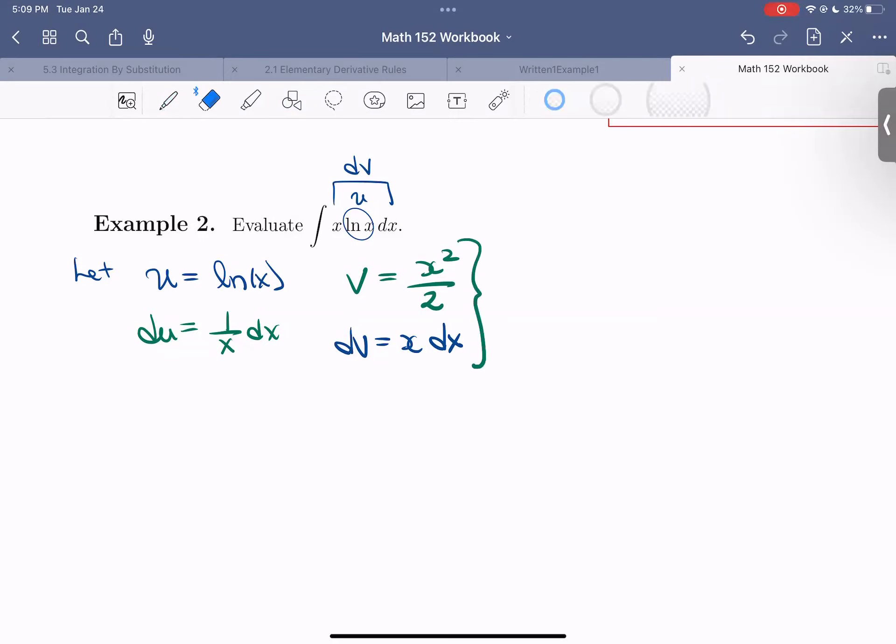So now integration by parts tells us that the integral of u dv is equal to u times v minus the integral of v du. So let's work that out for us.